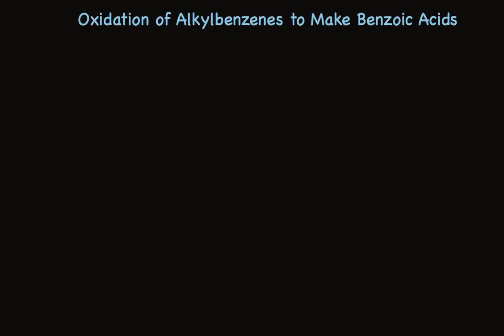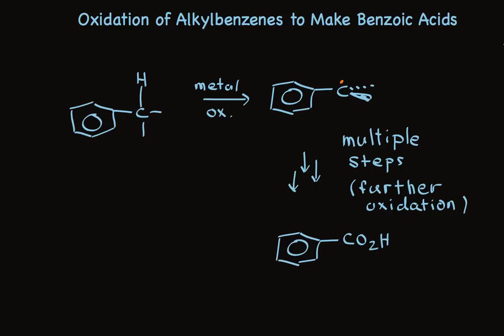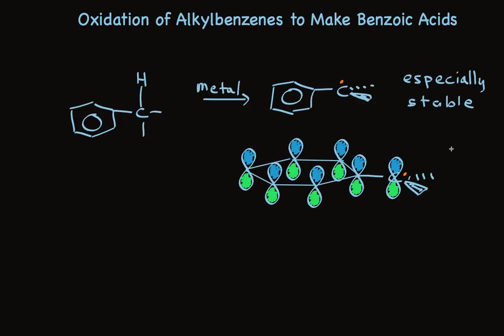While the mechanism of this reaction is complicated and not fully understood, it seems clear that the first step involves a metal oxidizing at the benzylic position to remove a hydrogen. This formation of the especially stable benzylic radical is reminiscent of what we saw for benzylic bromination. Multiple oxidative steps beyond this will then result in benzoic acid. The special stability of the benzylic radical comes from the p orbital on the benzylic carbon overlapping with the p orbitals of the aromatic ring, providing special delocalization of that radical electron.